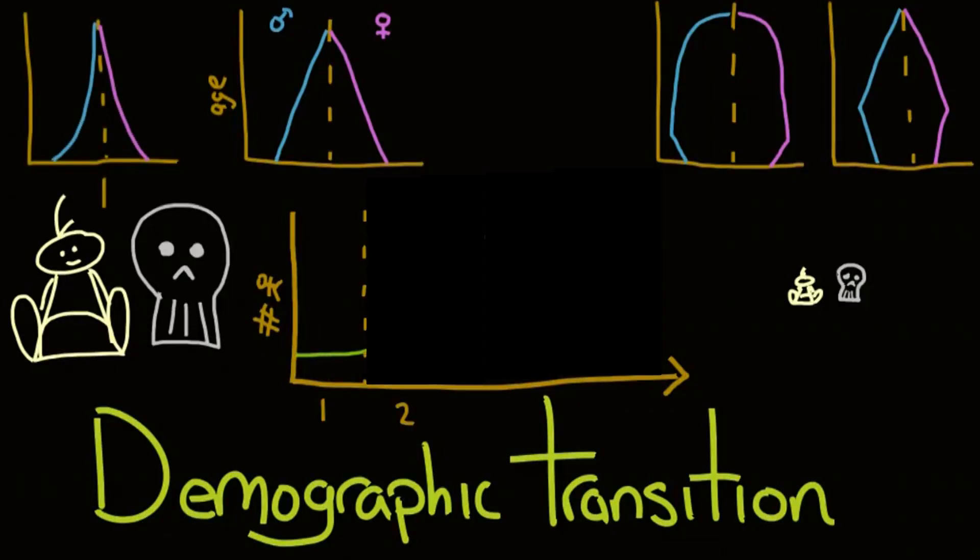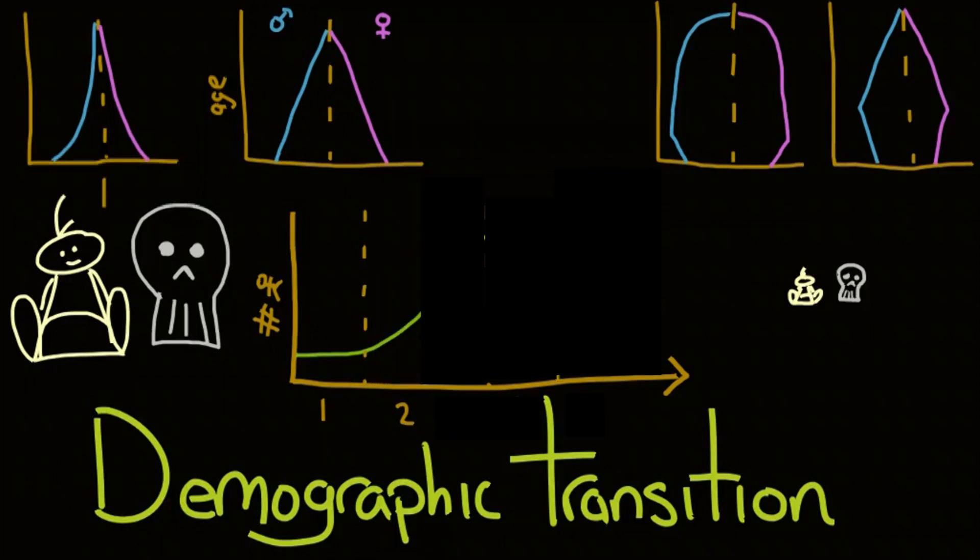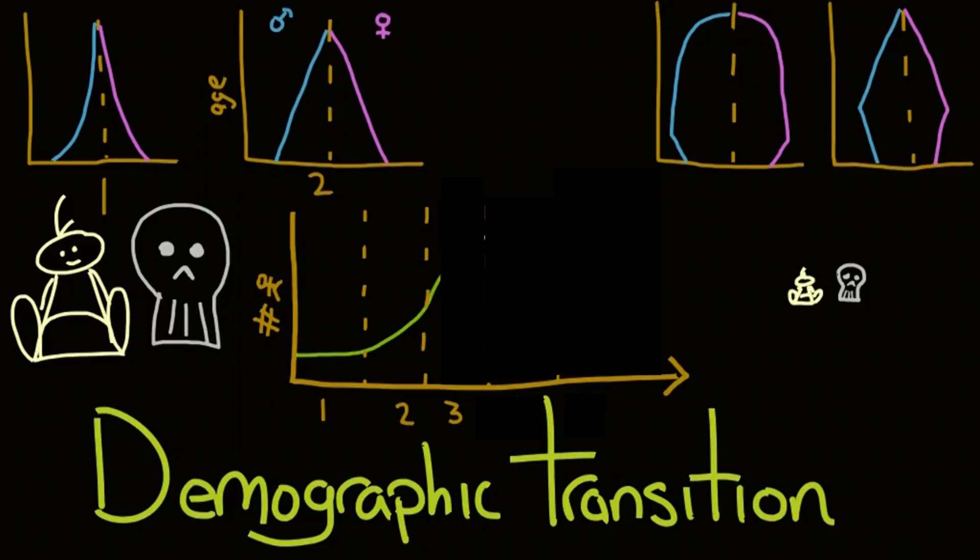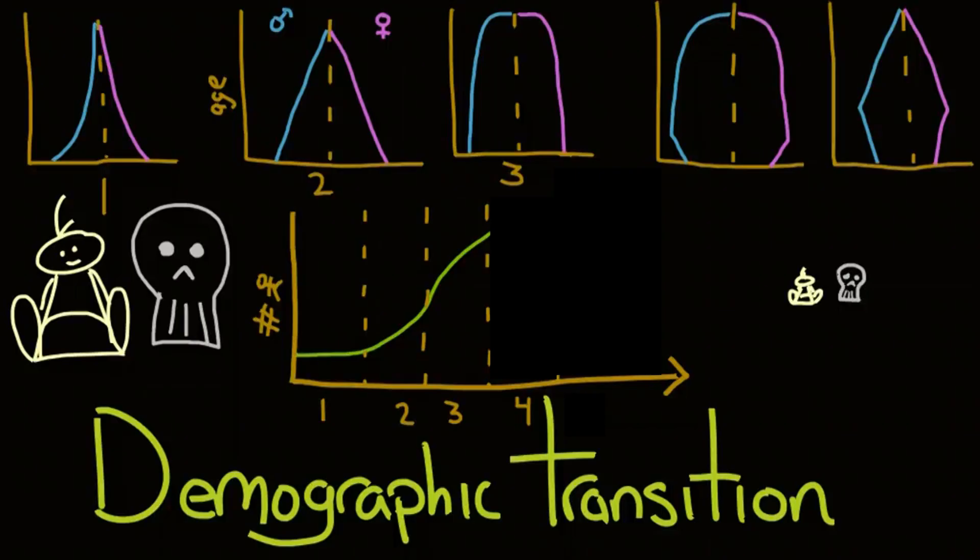Two, death rates begin to decline because of better sanitation and food supply, and the population of older people increases, modeled by an early expanding population pyramid. Three, birth rates also begin to decline because of access to contraception and changing social values, and the population stops growing quite as fast, which is modeled by a late expanding population pyramid. Four, the birth rates and death rates balance out, so the population stabilizes, but there are a lot of people because the population has been growing up until this point, which is modeled by a low stationary pyramid.